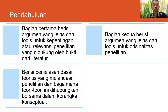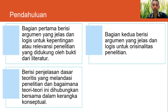Bagian berikutnya, pendahuluan berisi penjelasan dasar teoritis yang melandasi penelitian dan bagaimana teori itu dihubungkan dalam kerangka konseptual. Beberapa laporan penelitian seperti skripsi, tesis, disertasi menyajikan bab dua berisi tinjauan pustaka atau landasan teori — bagian ini perlu dimasukkan ke bagian pendahuluan dalam sajian yang ringkas dan lugas. Kita tidak perlu menyajikannya bertele-tele, cukup beberapa paragraf yang melandasi penelitian dan biasanya ada positioning yang memberikan pendefinisian dan kerangka dasar penelitian.